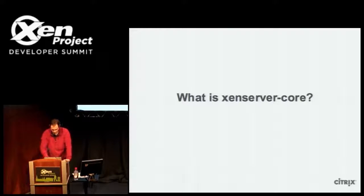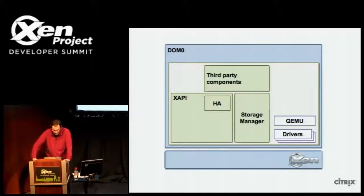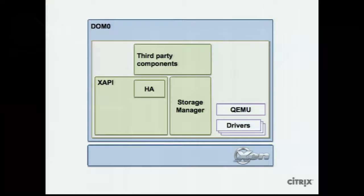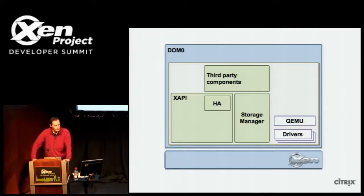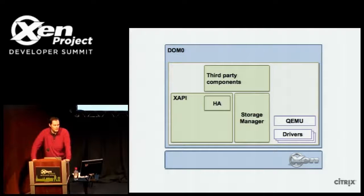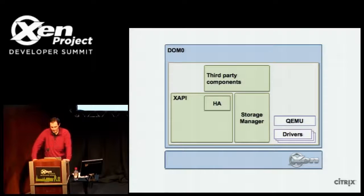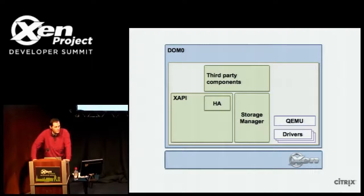What's actually in it — this is a bit like John's slide from previously — we package all the toolstack stuff, the XAPI and friends. We also package some other creature comforts which aren't really part of XAPI, like the storage managers and the XS console. Because what we're really trying to do is to get a system which looks as much like XenServer as possible on a standard Linux distribution. We don't include QEMU, we don't include drivers and we don't include Xen. That's mostly because these components are already upstreamed and working very nicely in Ubuntu and in CentOS, and so we just piggyback on that work.